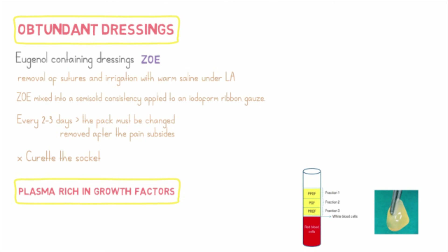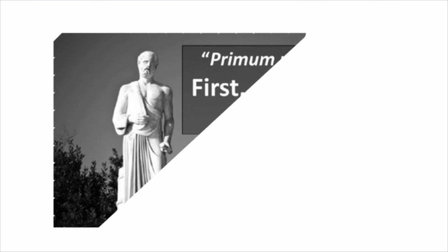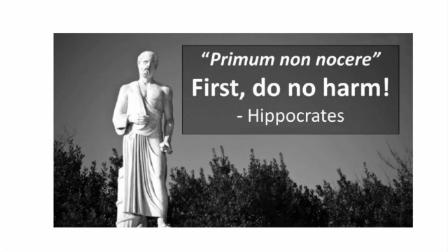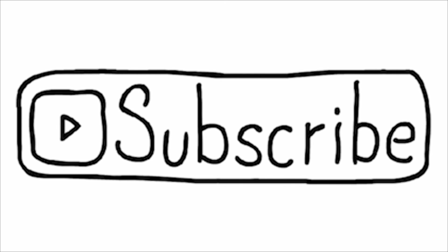More recently, plasma rich in growth factors — such as epithelial, fibroblast, and vascular growth factors — has shown remarkable success in management of dry socket, attributed to regenerative properties that help in accelerated wound healing and reduce patient pain and discomfort. Thank you for watching. I hope this video was helpful — do like, share, and subscribe to the channel Dentistry Unfiltered.